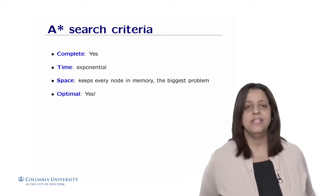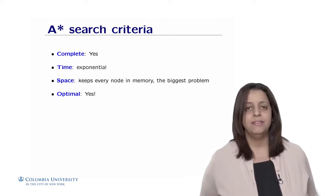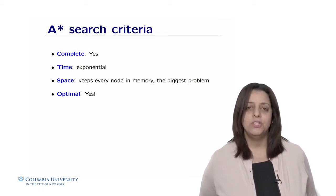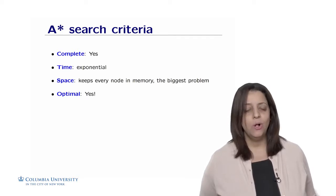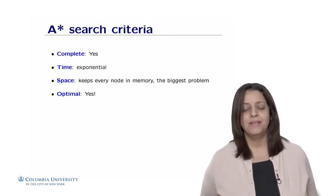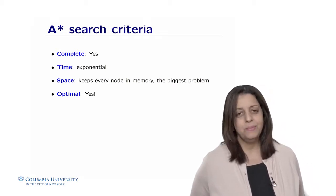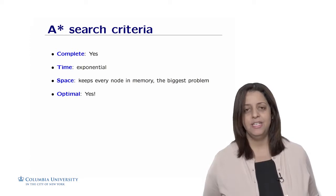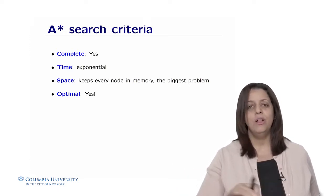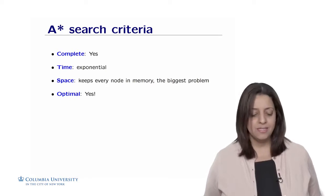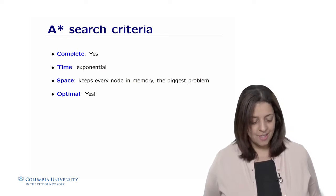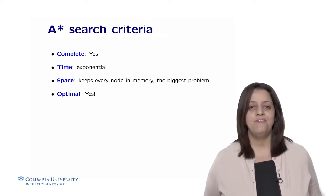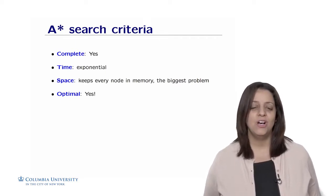Regarding the search criteria for A*: it is complete, meaning if there is a solution, it will find it. Unfortunately, time complexity is still exponential and space complexity is also exponential, because A* keeps all nodes in memory to find the optimal solution. As seen in the example, many nodes remain in the fringe waiting to be explored, requiring significant memory. However, A* is optimal — if a solution exists, it will find the one with the least cost.